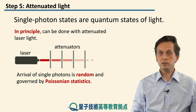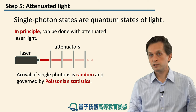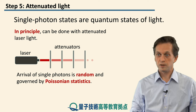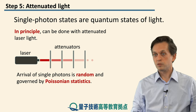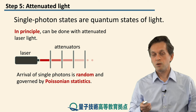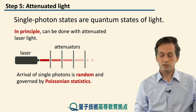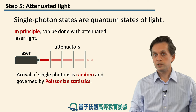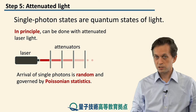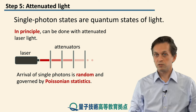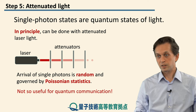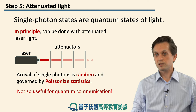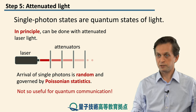In principle this works, and we will use this in the next lesson when we look at interference between single photons. However, one big problem is that the arrival of these photons is random — it's given by Poissonian statistics. And in order to really be useful in quantum communication, we need something that's not random. So for the purpose of quantum communication, such a scheme is not very valuable and completely not practical.